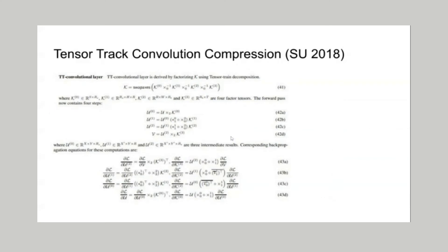Tensor train decomposition is used to split the kernel into several lower-ranked components. Equation 42 describes the compressed kernel tensorization and equation 43 describes the back propagation expressions. Tensor train, like CP and Tucker, leads to rank reduction as an approximation, and this slide describes a successful experiment achieving a 15 to 20 percent reduction in computational load and a decrease in parameters, as described in the cited reference.